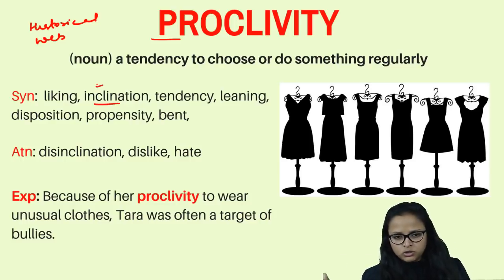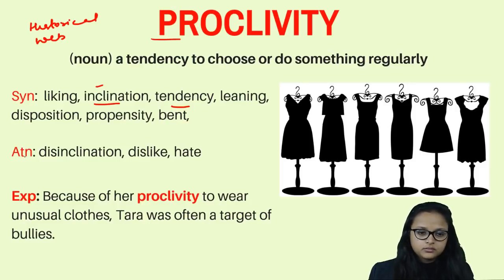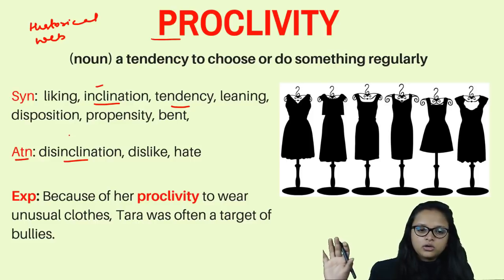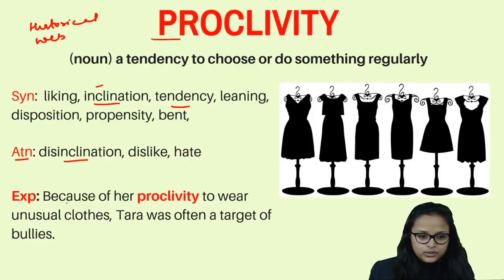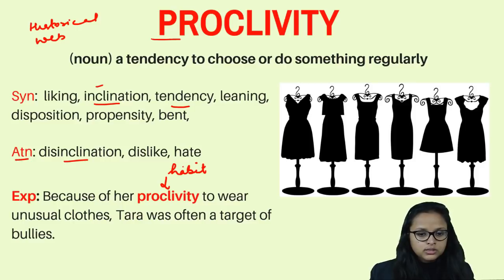Synonyms for proclivity are: liking, inclination, tendency, leaning, disposition, propensity, and bent. Antonyms are: disinclination, dislike, and hate. Example sentence: 'Because of our proclivity to wear unusual clothes, Tara was often a target of bullies.'